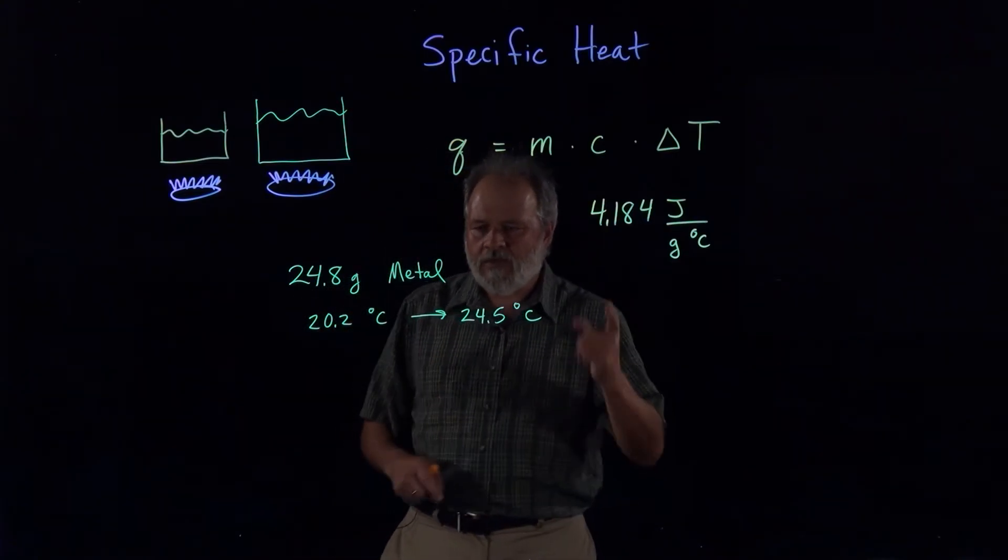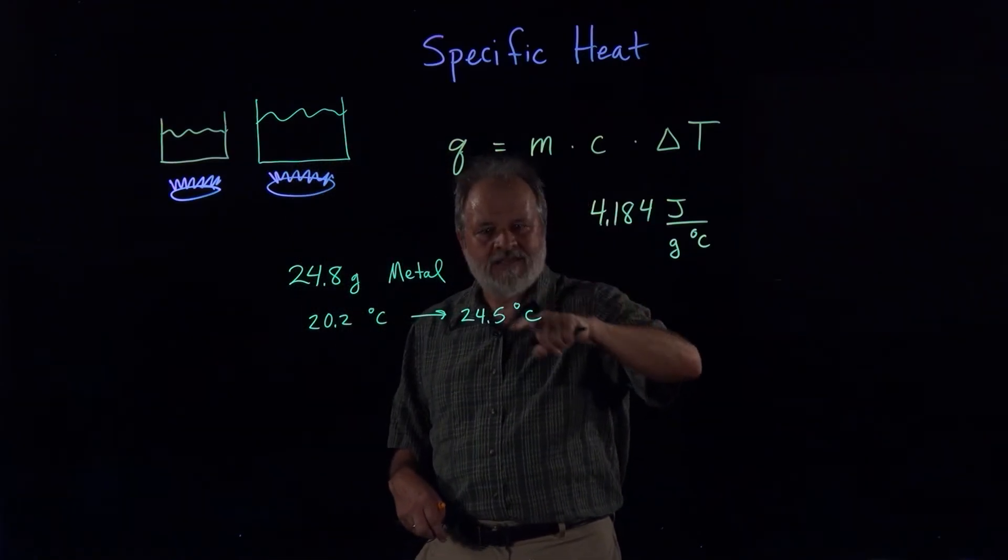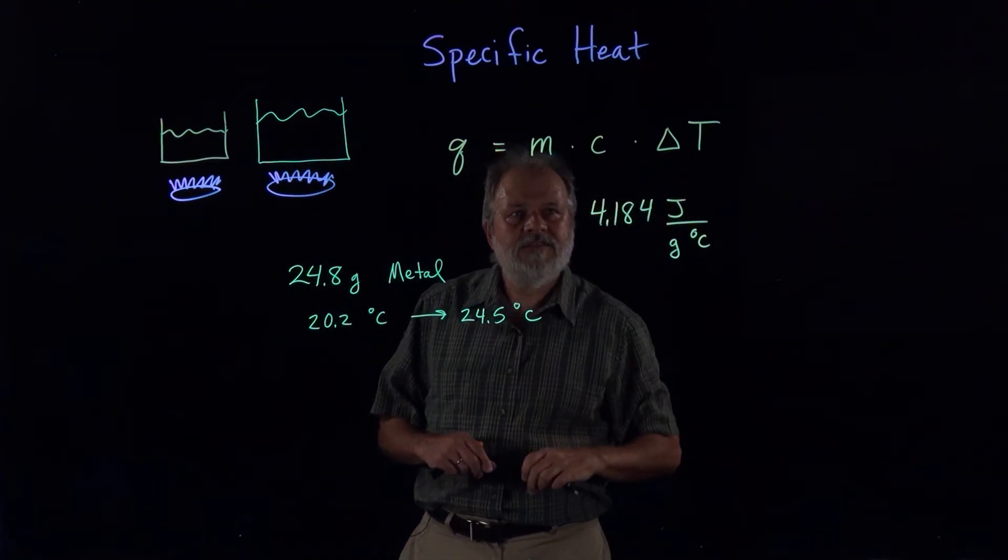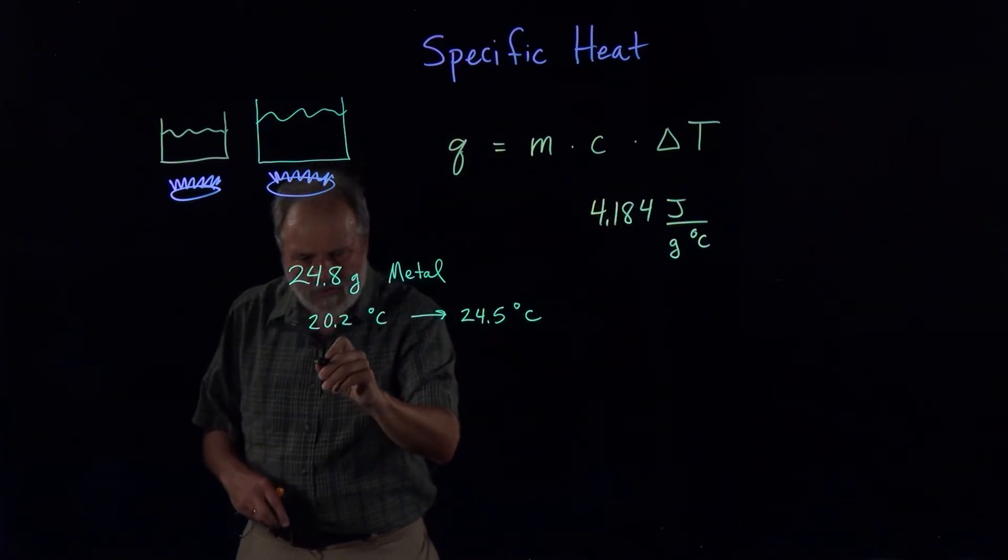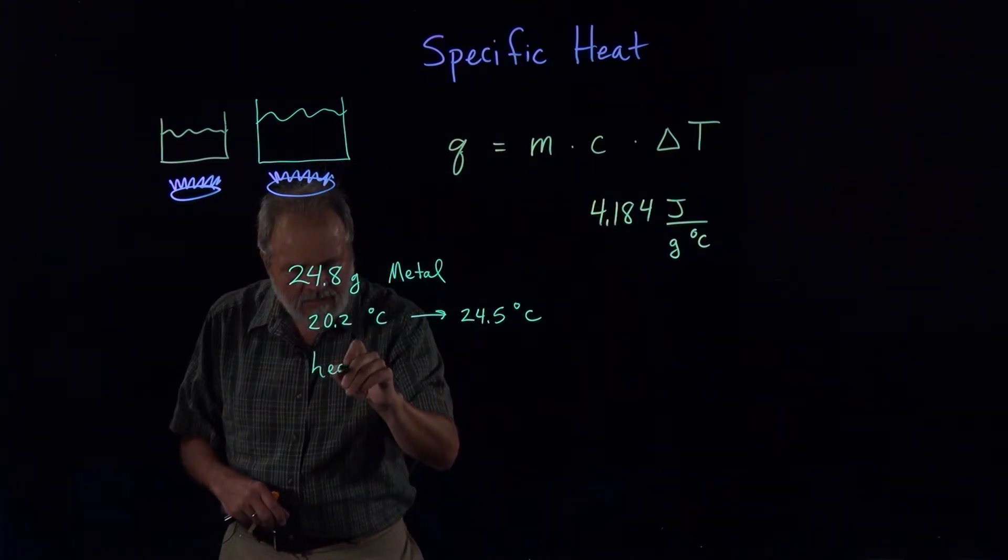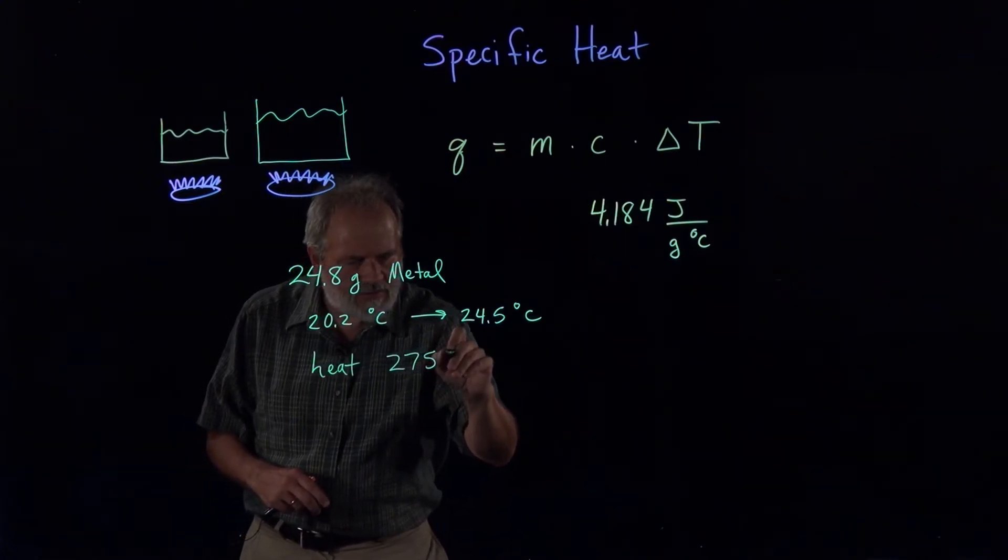And what else do we need? We need to know the amount of heat. So far we've been given the mass and the information to calculate change in temperature. So if we're going to solve for C, we need to know Q, and the heat applied was 275 joules.